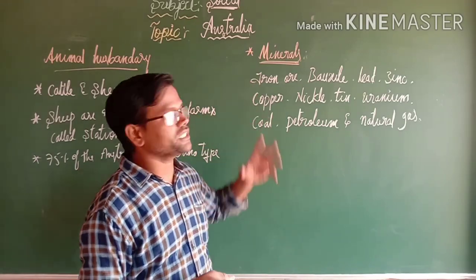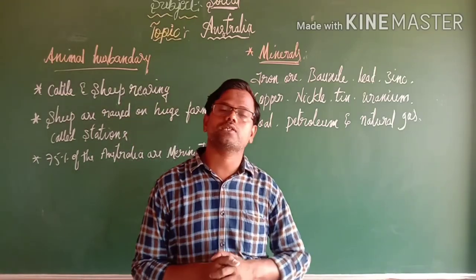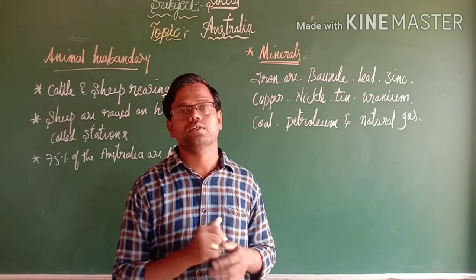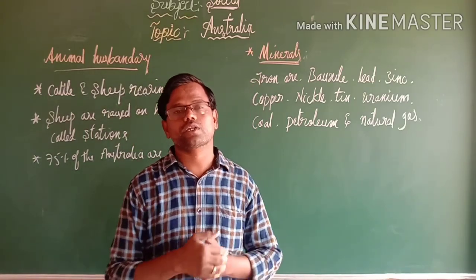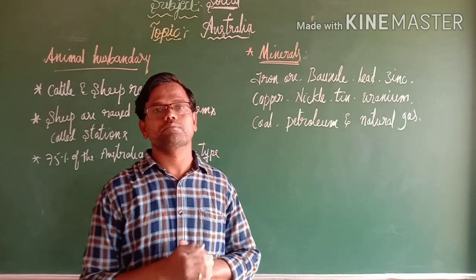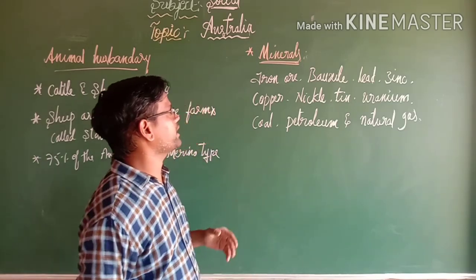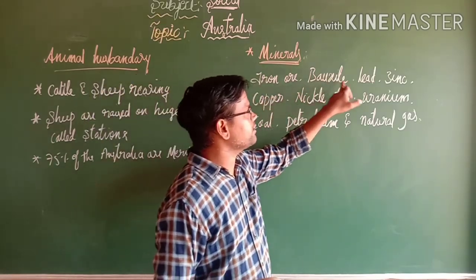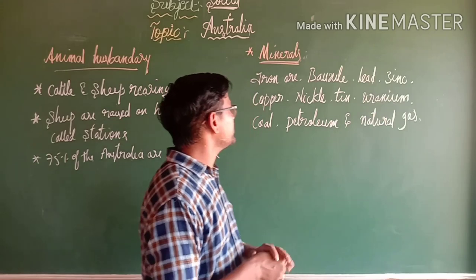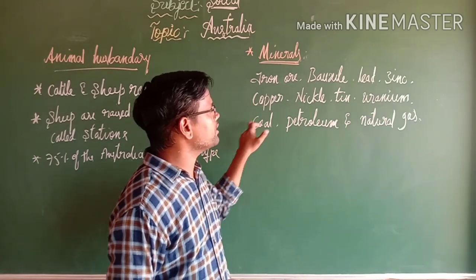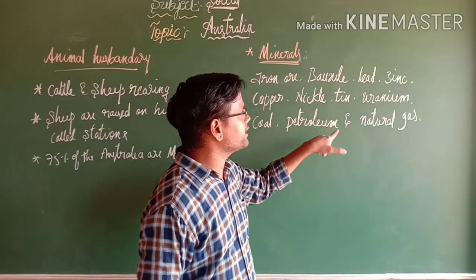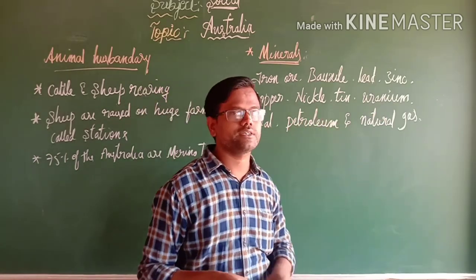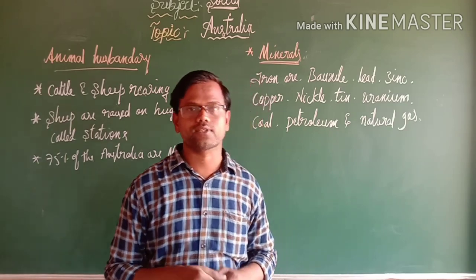Australia is rich in minerals. The important minerals include iron ore, bauxite, lead, zinc, copper, nickel, tin, uranium, coal, petroleum, and natural gas.